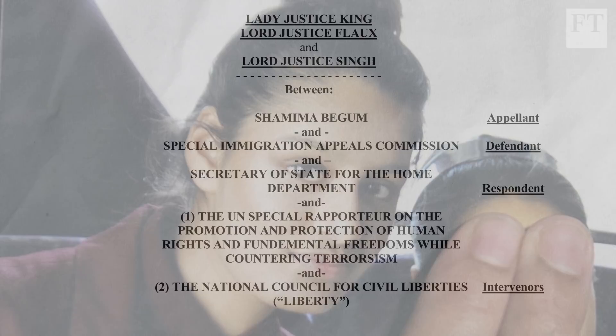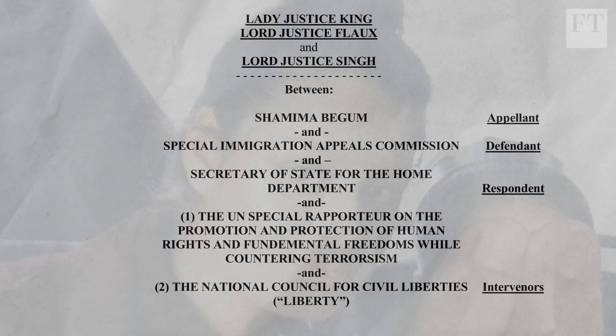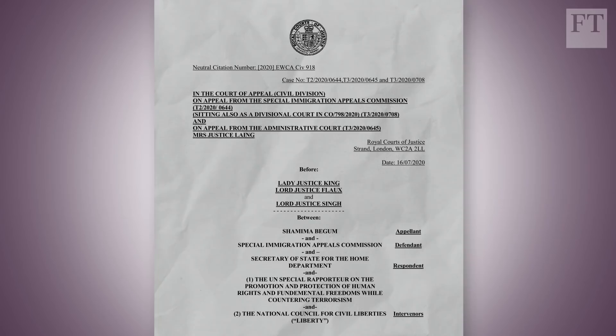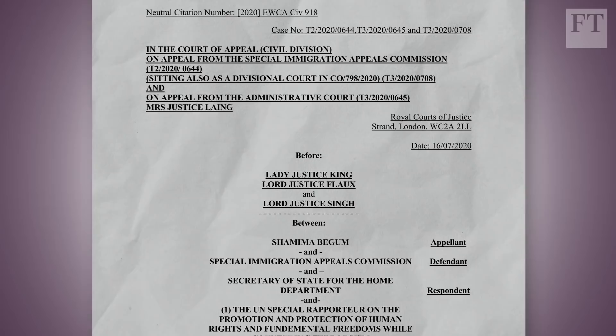Parliament has legislated extensively in this area, including for a specialist tribunal called the Special Immigration Appeals Commission, or SIAC. SIAC has made some preliminary decisions in this case, and it is those decisions which are the subject of this appeal. Those decisions were made in a lengthy and detailed way. So in this case, what the Court of Appeal is being asked to do is to see whether that specialist tribunal has made the right decisions.